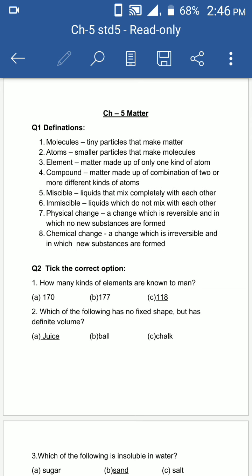Its opposite is compound - matter made up of combination of two or more different kinds of atoms. Element ka matlab sirf ek type ke atom se bane. Compound ka matlab ek se zyada. Combination of bahut sare atoms se jo matter banta hai, usko kehte hain compound. Ek hi type ke atom se banta hai, usko kehte hain element.